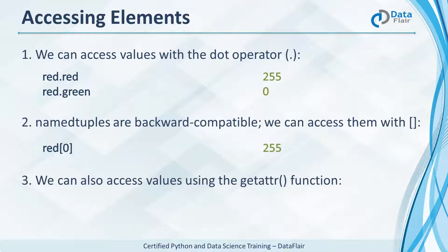Yet another way to access values in a named tuple is the getattr function. In the named tuple red, the value of green is zero.